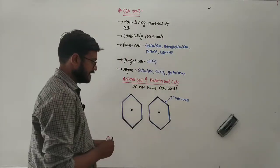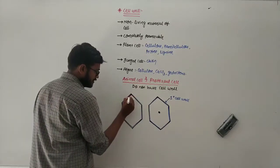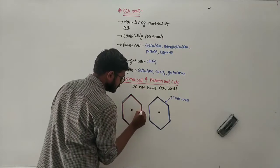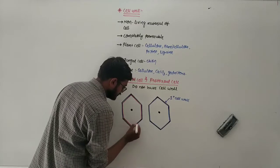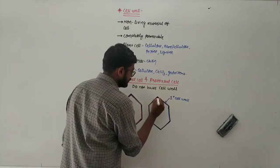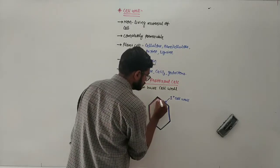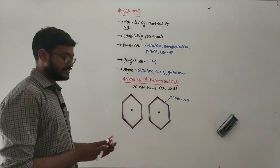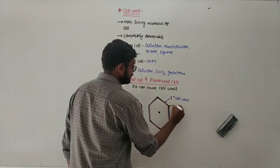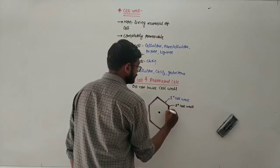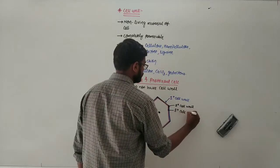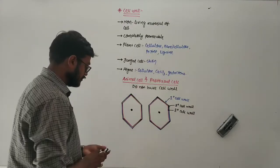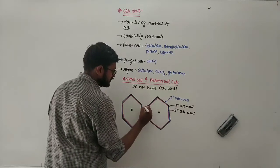On maturation, a third cell wall is also present on the innermost side, called the tertiary cell wall. So from the outer side to the inner side, three cell walls are present in the case of a plant cell — primary, secondary, and tertiary — with the nucleus and cytoplasm inside. Both cells are joined by a specialized connection between them.